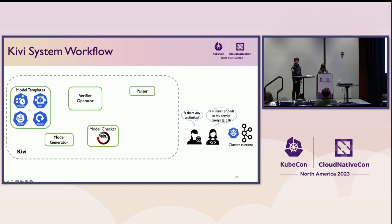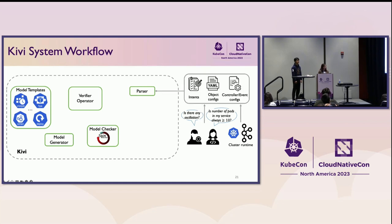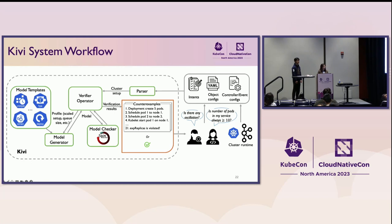The operator may ask questions like: is there any oscillation? Or is the number of pods in my service always more or equal to 10? We take those intents and the cluster configuration. Our parser converts them into a uniform format. A verifier operator sends a profile to the model generator, which produces a related model from a predefined model template. The model is then sent to the model checker, which returns the verification result or a counter-example with a sequence of actions.